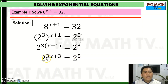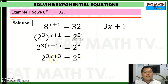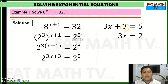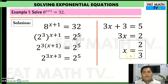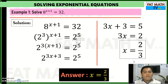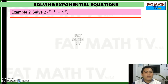Using the one-to-one property of functions, these two exponential expressions are equal, so their exponents are equal: 3x plus 3 equals 5. Adding negative 3 to both sides gives 3x equals 2, and dividing both sides by 3 gives x equals 2/3. So the value of x that satisfies this equation is 2/3.